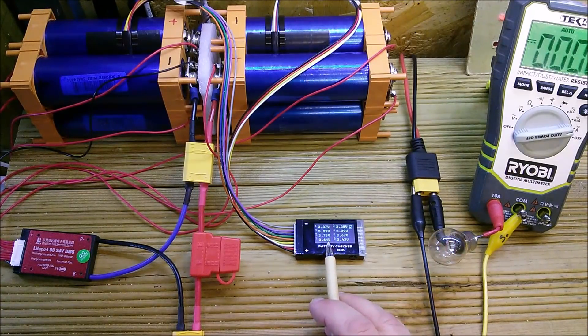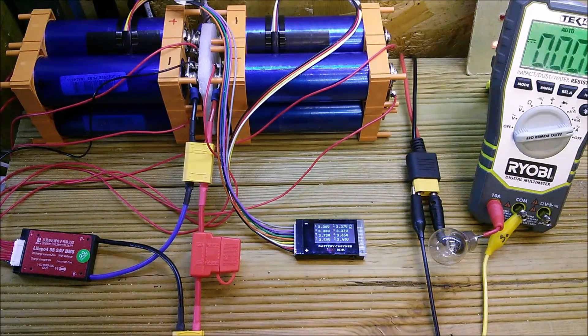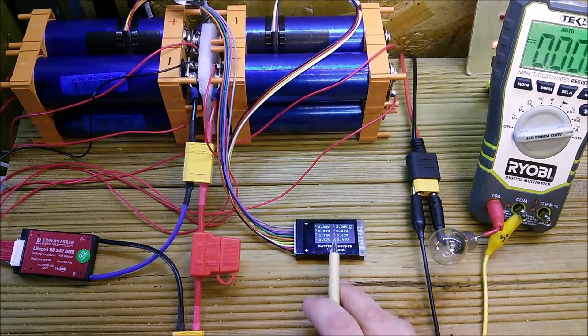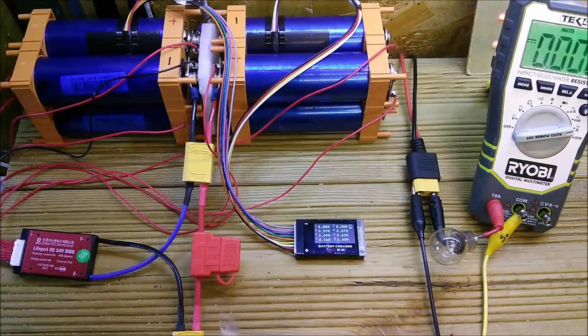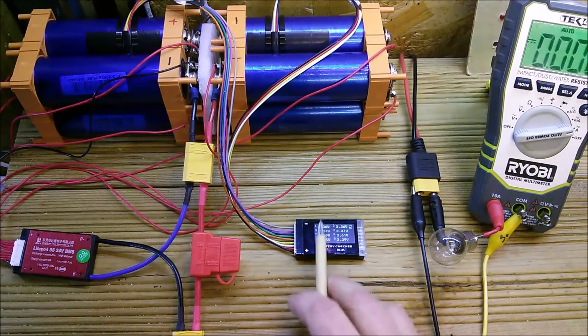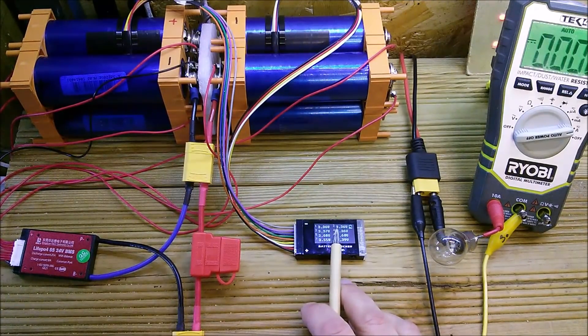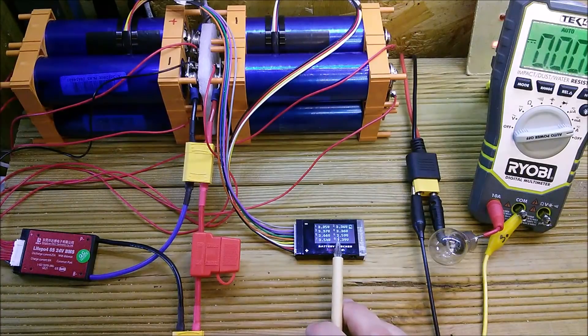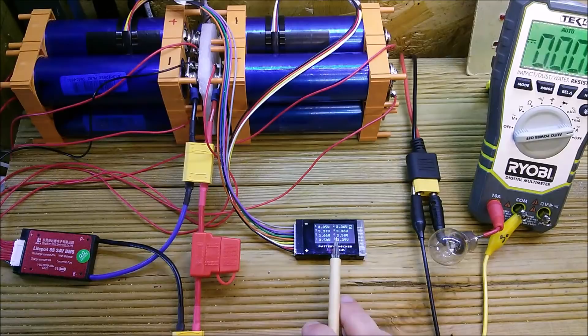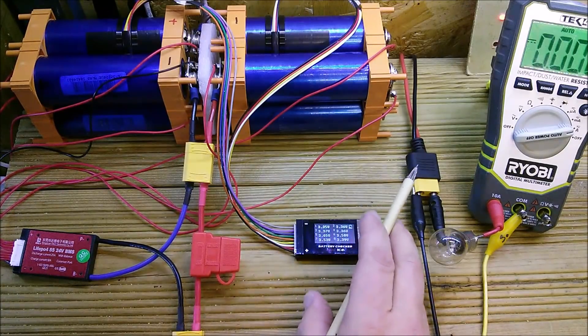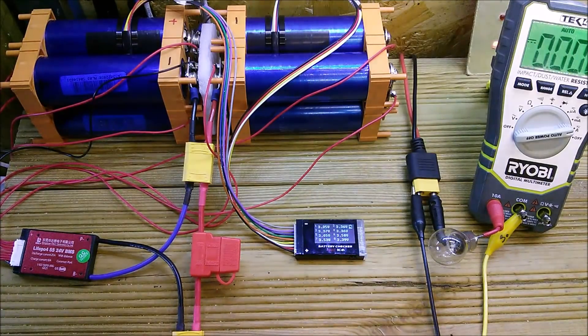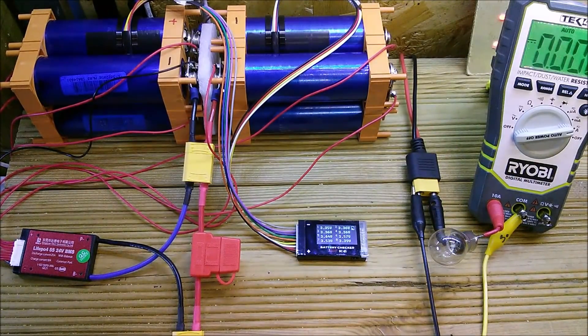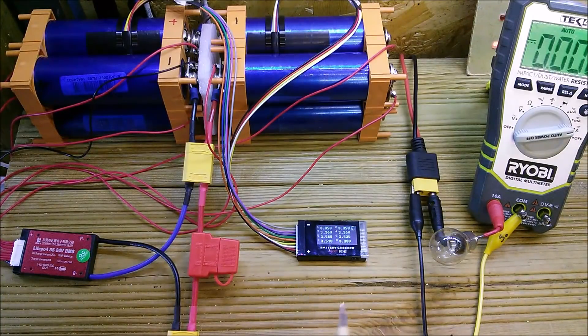Now the point about this is that cell 5, which actually is that one at the back on the top there, is way ahead of all the others. Now I don't know whether the balance on this BMS is actually going to do anything very much. I think it would be better if I set up a charging and balancing setup that isn't running off the solar, for the time being or at least for as long as to get these cells into balance because they're clearly way out. I'm not sure when this will cut back in.